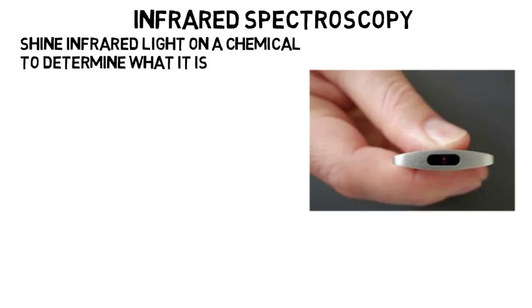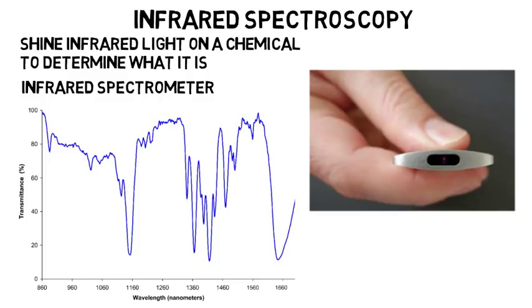But using a device called an infrared spectrometer, we can analyze the spectrum of light that comes off, which tells us which wavelengths are most present in the light. So essentially, depending on how the graph looks and where the maximum points are, we can tell what the chemical is.